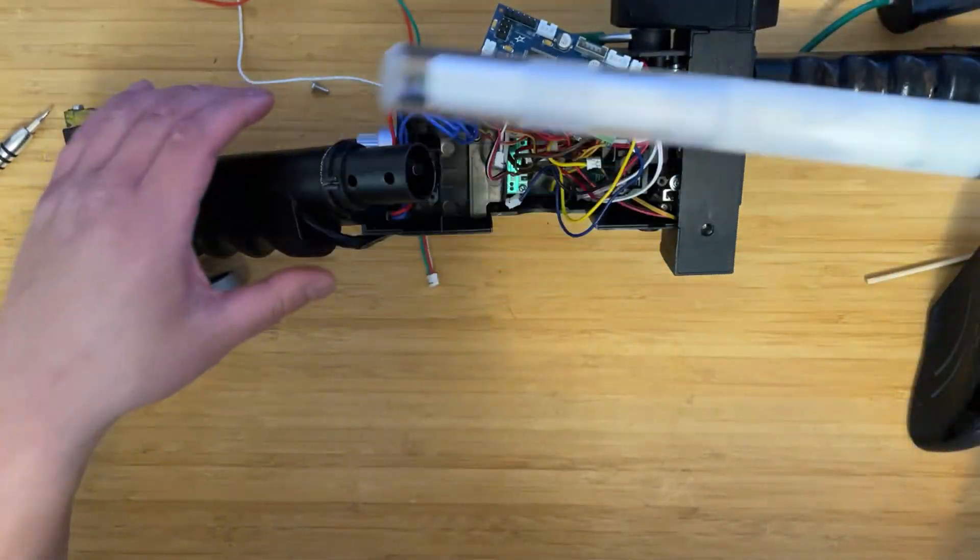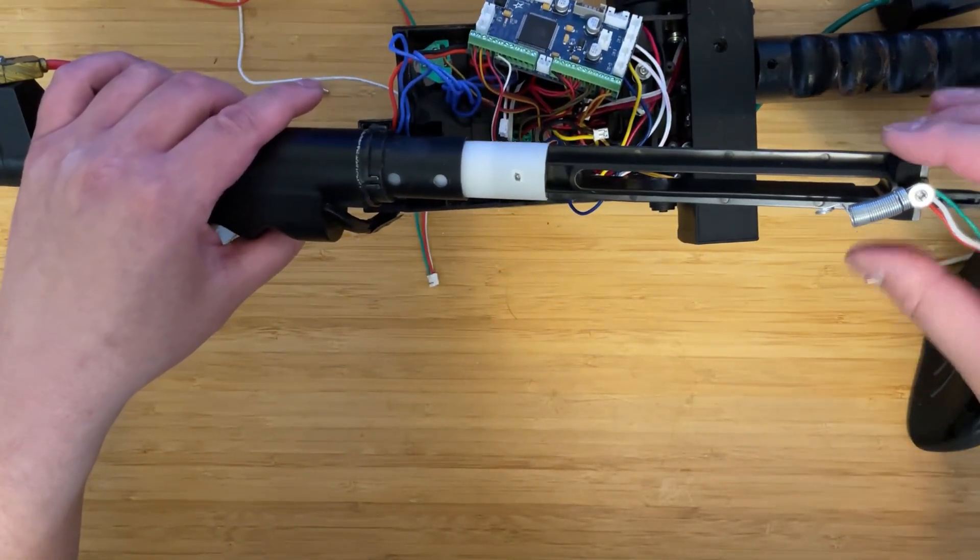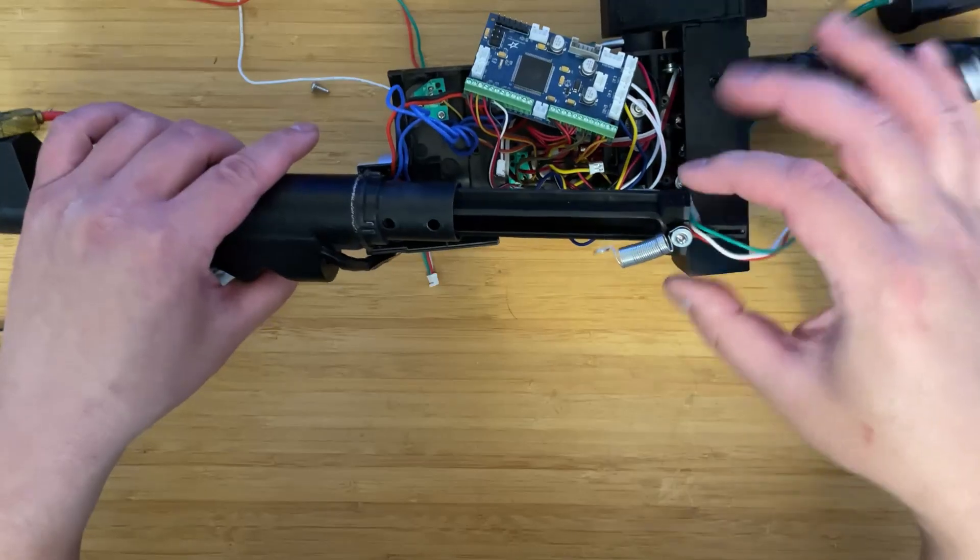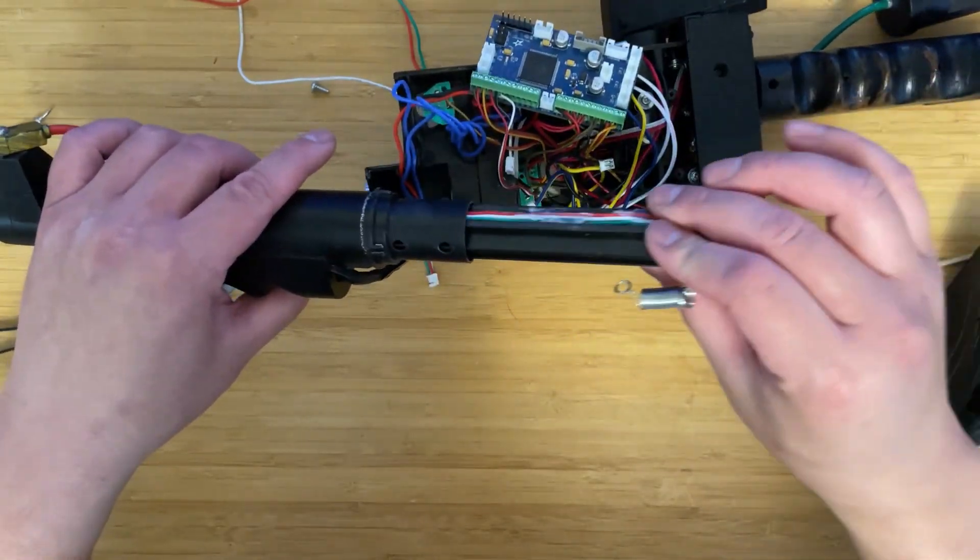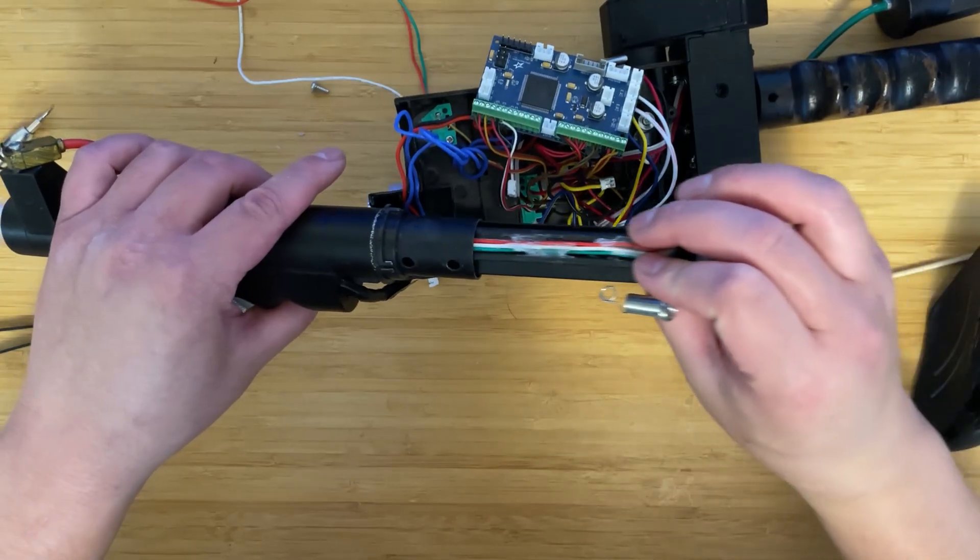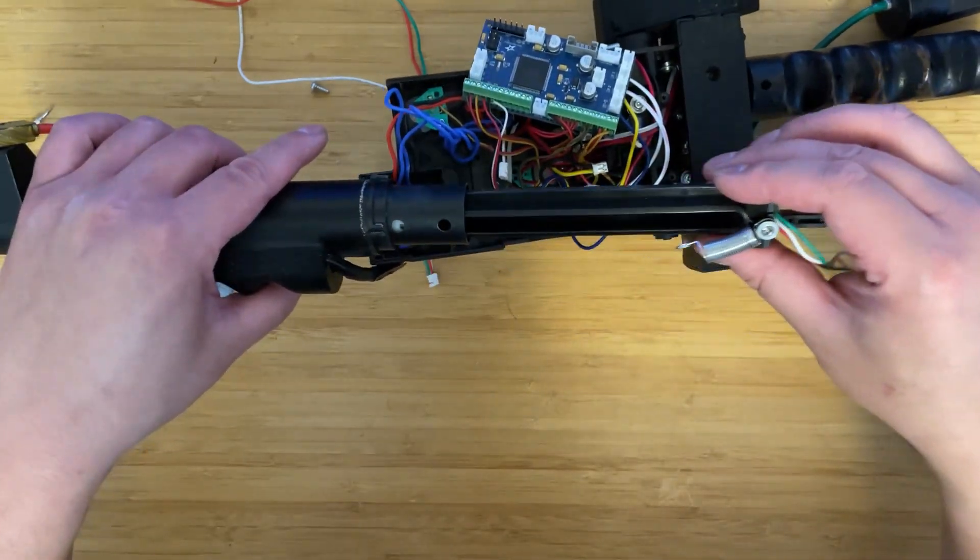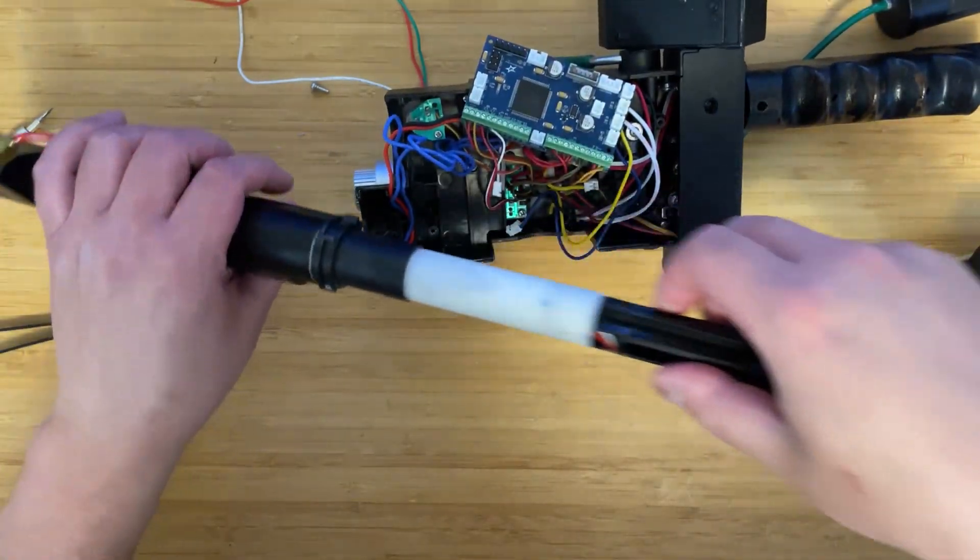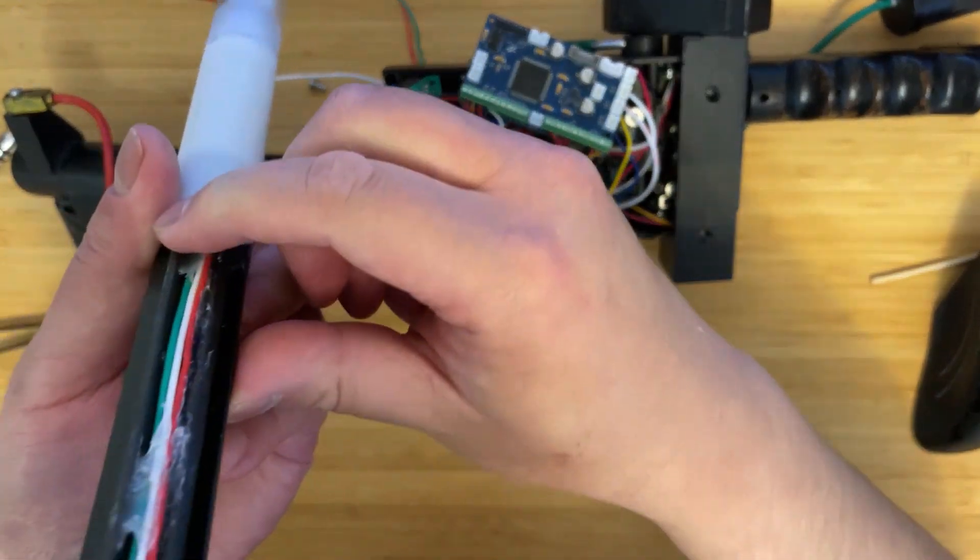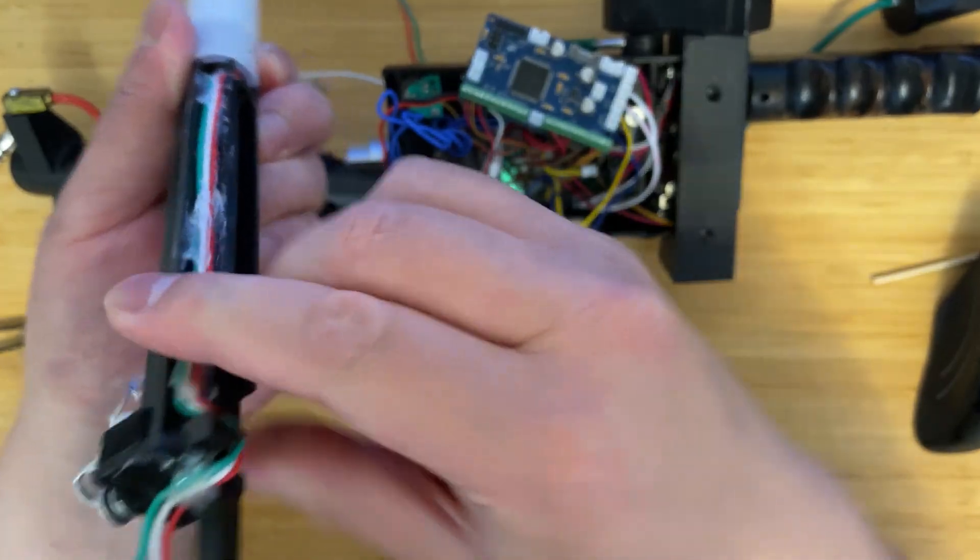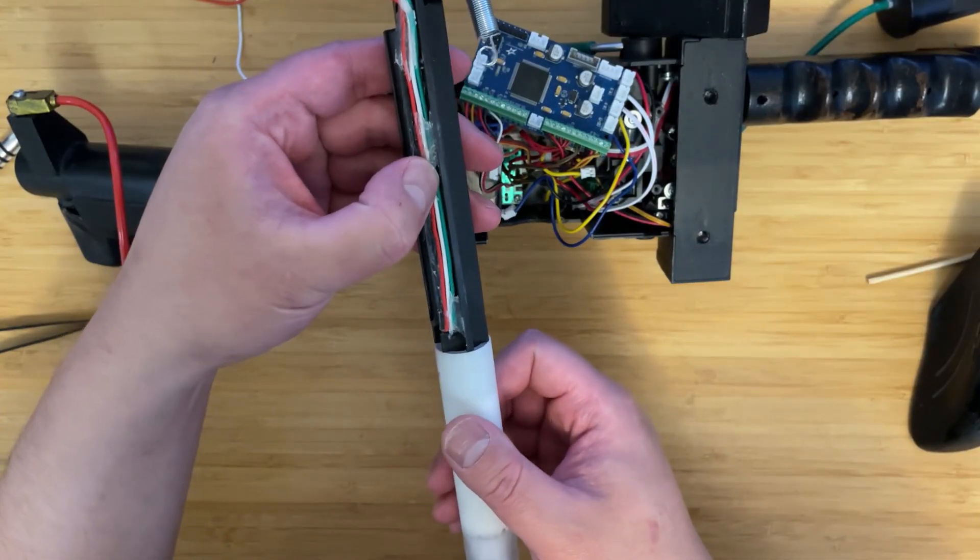Anyways, once you've smoothed out the glue as much as you can, do a test. Stick it back into the barrel and see if there's any catches, see if it moves smoothly or not. It kind of catches right about here. So if it catches, that probably means some of the glue is still sticking out, so just go back and do what you can.